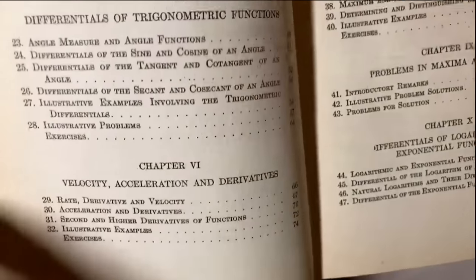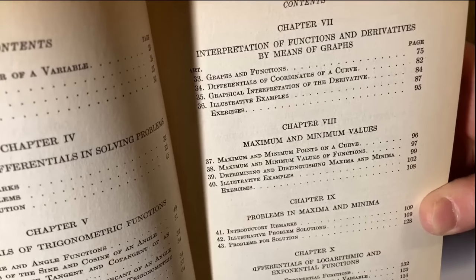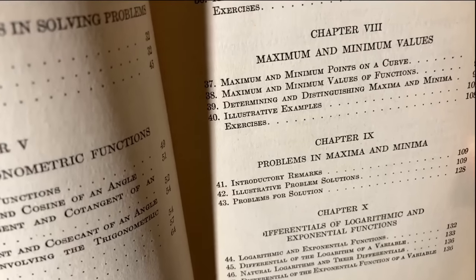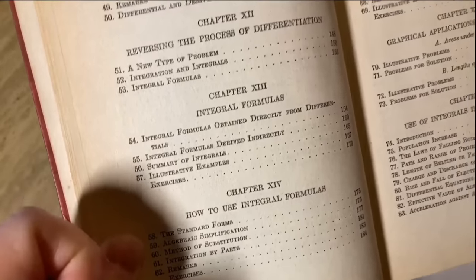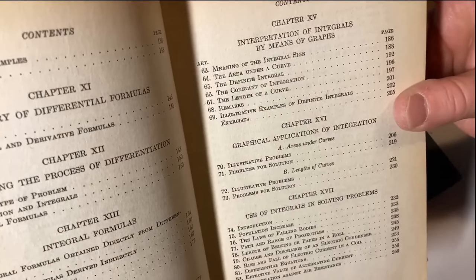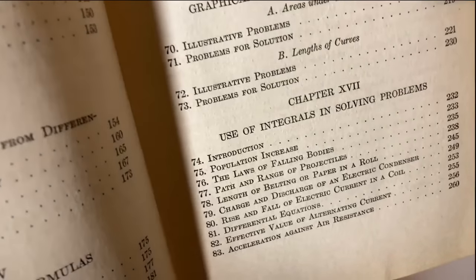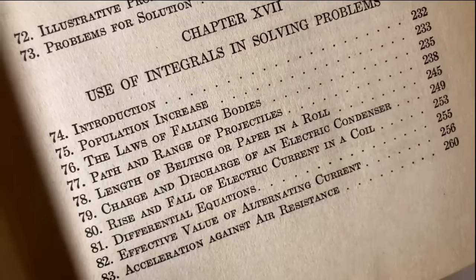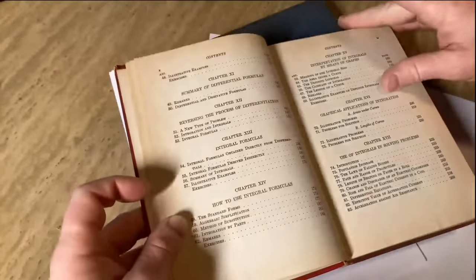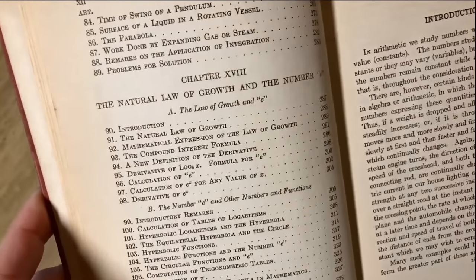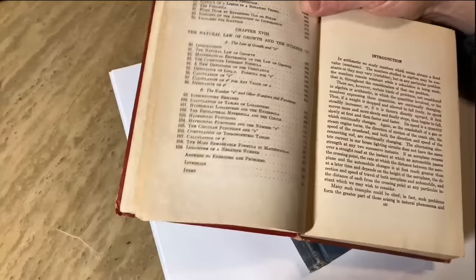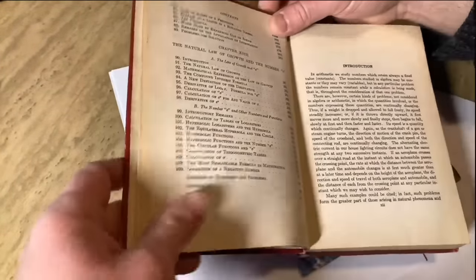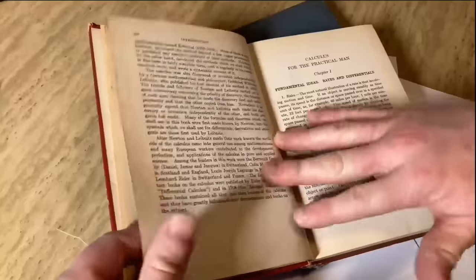So differentials of trigonometric functions. Velocity, acceleration, and derivatives. Interpretation of functions and derivatives by means of graphs. Maximum and minimum values. Problems in maxima and minima. Differentials of logarithmic and exponential functions. Cool stuff. Then we have a summary of differential formulas. Reversing the process of differentiation. Integral formulas. How to use integral formulas. Interpretation of integrals by means of graphs. Graphical applications of integration. And then use of integrals and solving problems. While population increase. The laws of falling bodies. I bet Feynman didn't know he was going to win the Nobel Prize when he was reading from this book. That's pretty incredible. The natural law of growth and the number E.